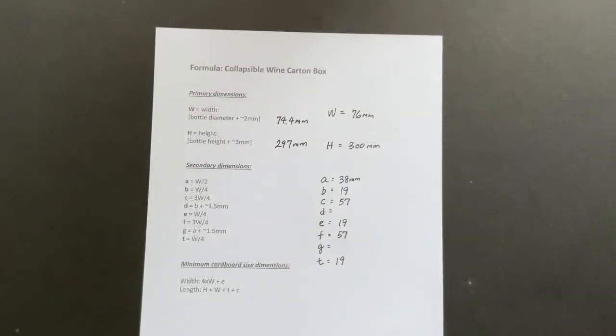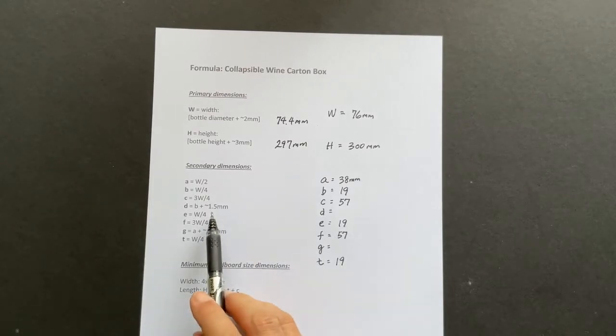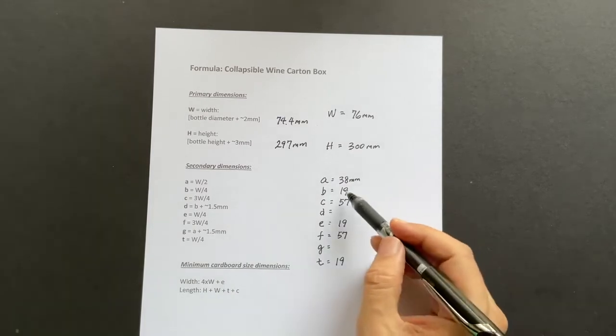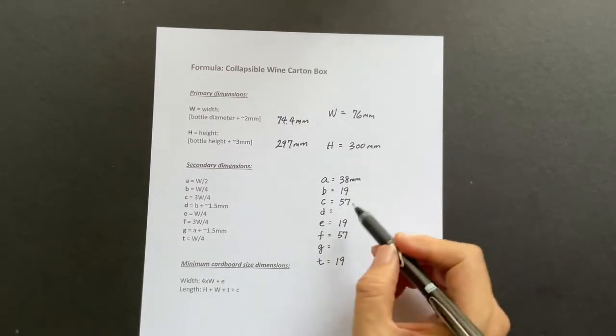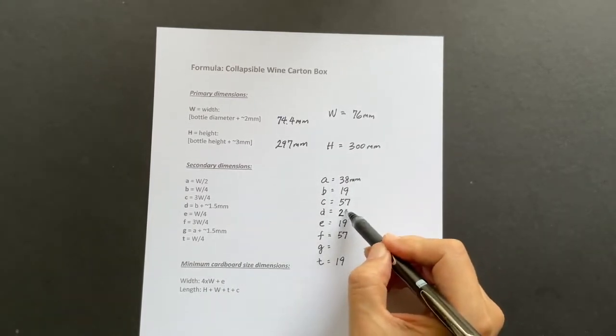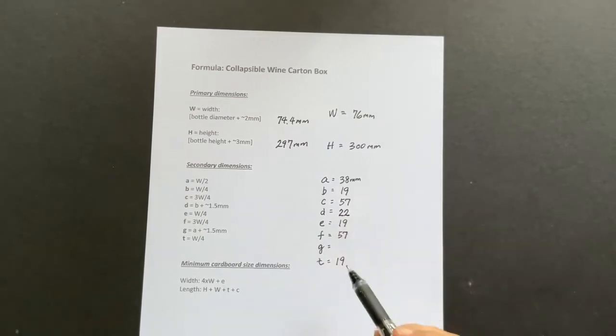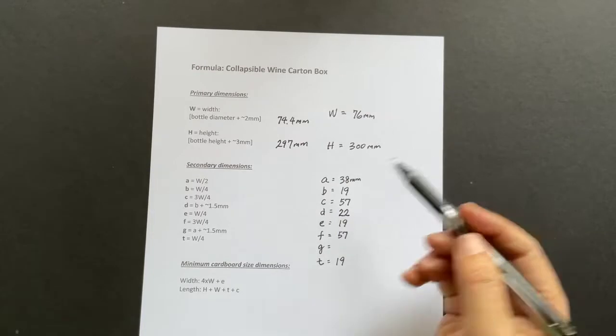The secondary dimensions here are all a fraction of W, except for D and G. D is a function of B, and I rounded it off to 22. G is a function of A, and I rounded it off to 40.